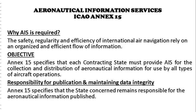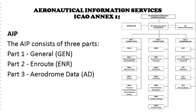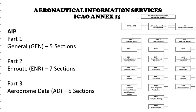The AIP consists of three parts: Part 1, Part 2, and Part 3. Part 1 is General, Part 2 is En Route, and Part 3 is Aerodrome Data. Part 1 General is divided into five sections. General 0 is a record of AIP amendments or supplement checklist and table of contents. General 1 covers national regulations and requirements on facilitation, flight documents, summary of national regulations, international agreements and conventions, and differences from ICAO standards and recommended practices.